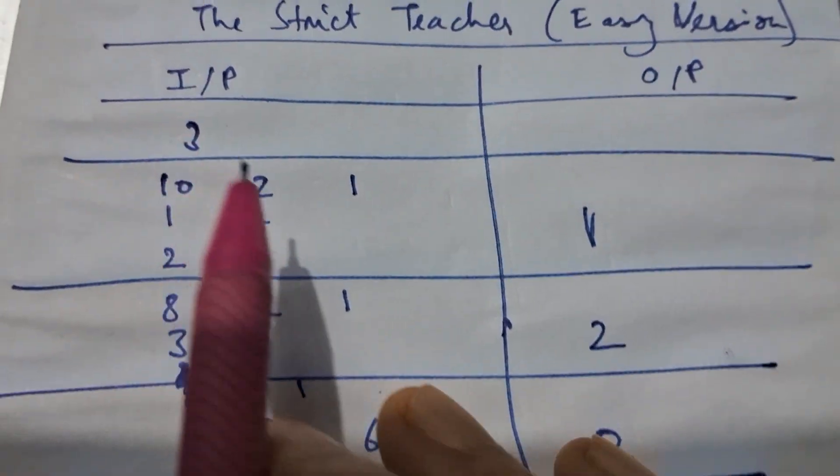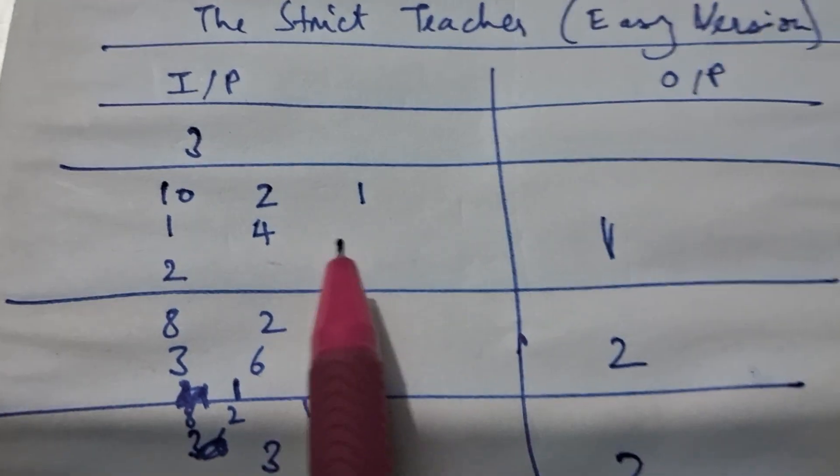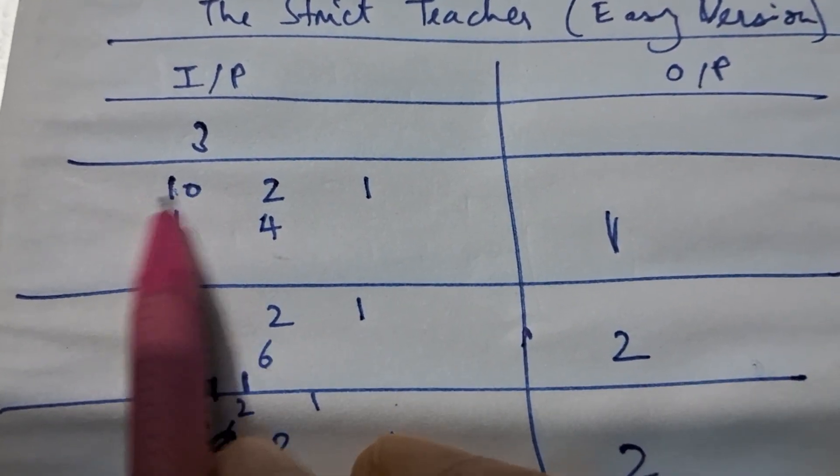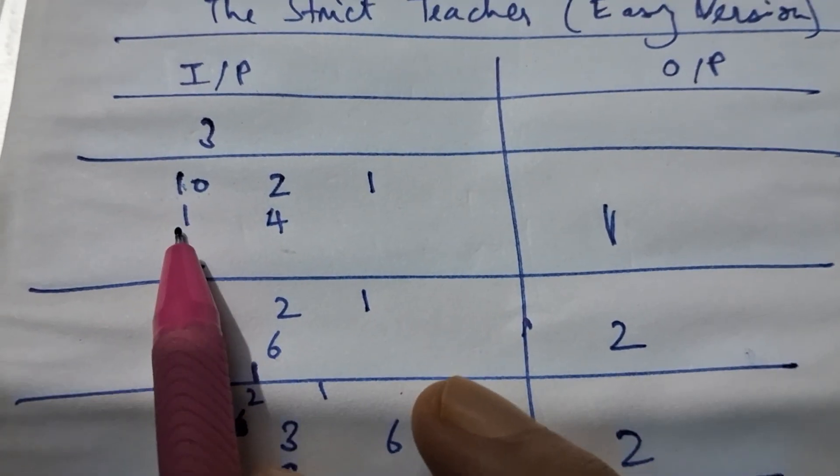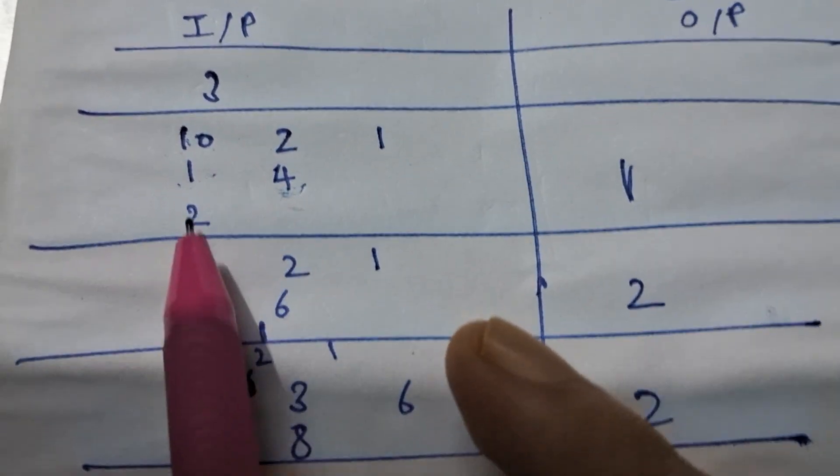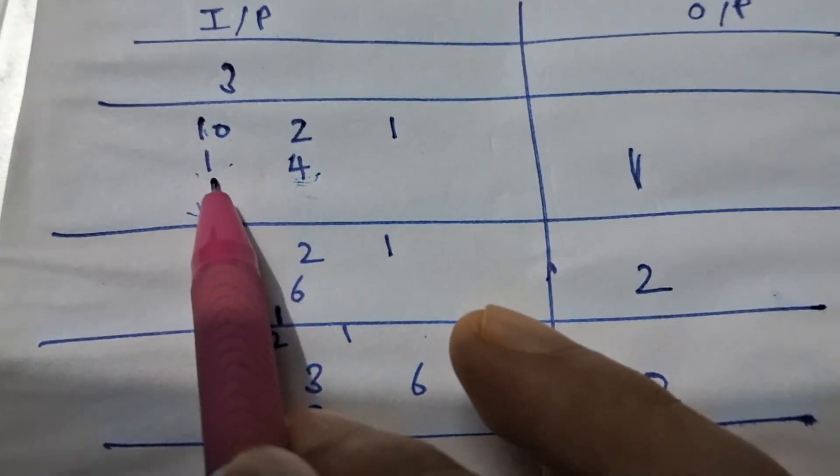The problem statement was very simple. You are given like these two are fixed - it is two and one because it is the easy version. So basically these are the total number of cells.